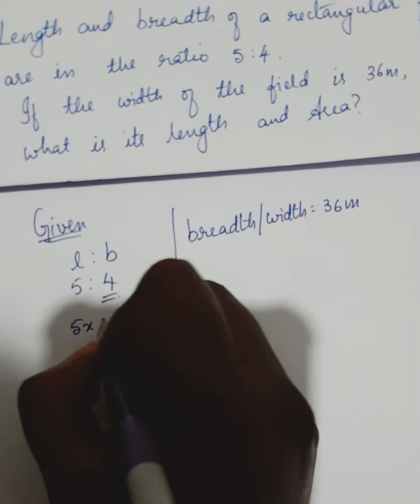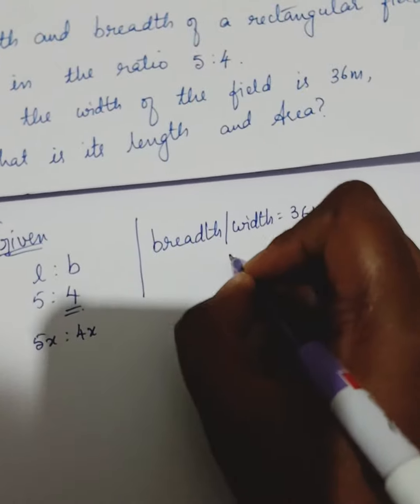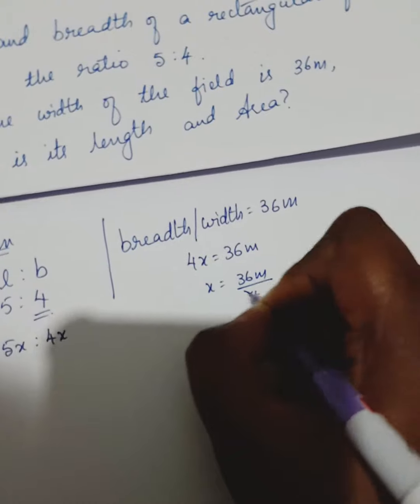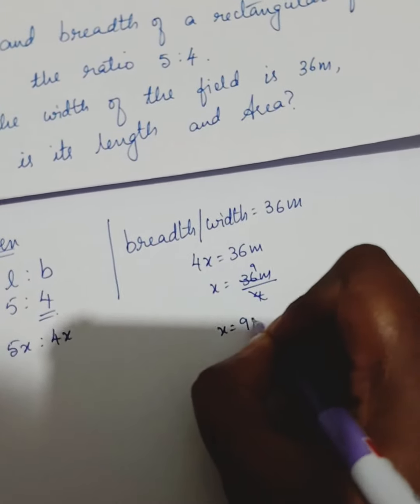Now, according to this, let us consider this as 5x is to 4x. Now, 4x equals to 36 meter. x equals to 36 meter by 4. So, x is 9 meter.